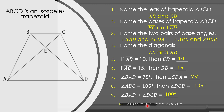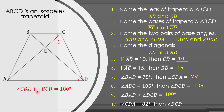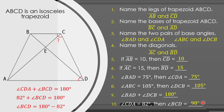For our last question, angle CDA is equal to 82 degrees, then angle BCD is equal to what? Remember that the measure of angle CDA plus the measure of angle BCD is equal to 180 degrees. Since angle CDA is equal to 82 degrees, then 82 plus angle BCD equals 180. Therefore, the measure of angle BCD is equal to 180 minus 82, which is 98 degrees.